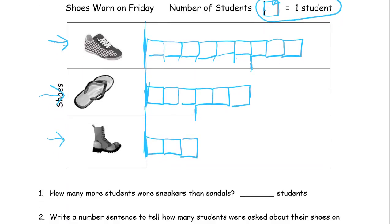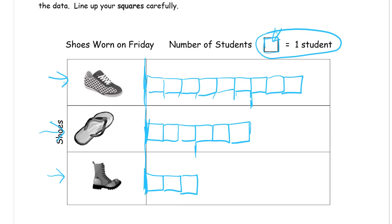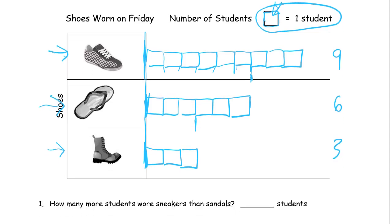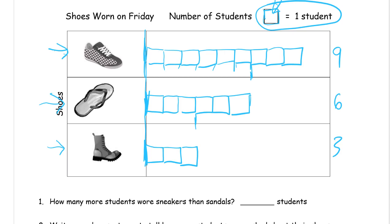How many more students wore sneakers than sandals? You can count the squares you drew, or write the numbers: nine for sneakers, six for sandals, three for boots. You could write a subtraction equation — nine minus six. Or you can see from the bars that they're the same up to six, then it's one, two, three more. The sneakers have three more than the sandals, so nine minus six equals three.